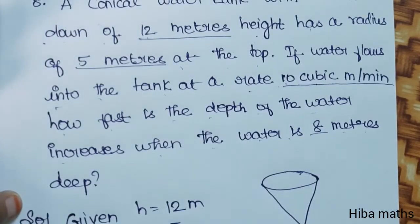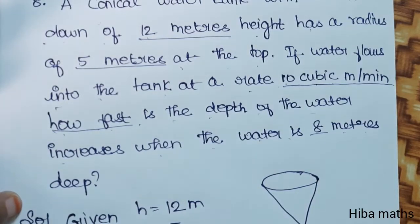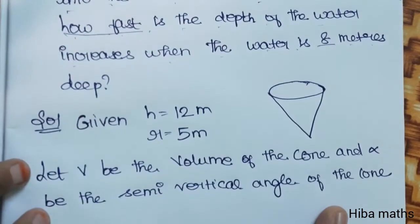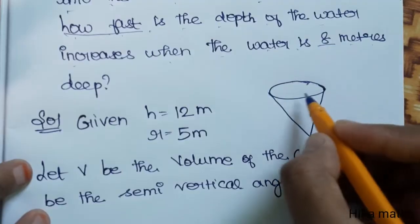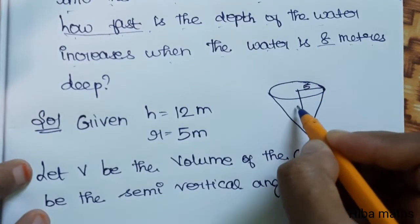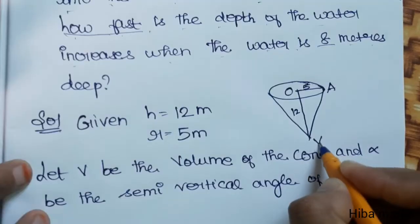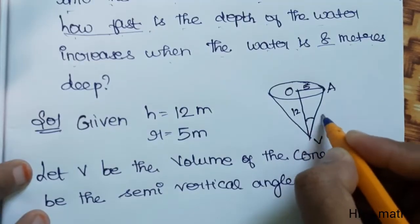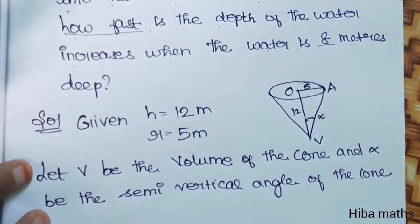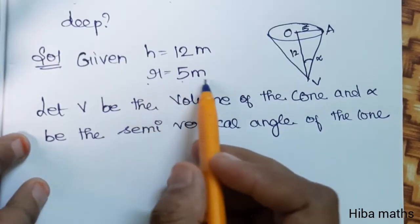How fast is the speed — that is, the rate at which the height increases with respect to time, dH/dt. In the solution: given height is 12 meters, radius is 5 meters.